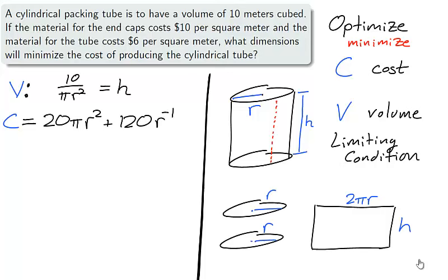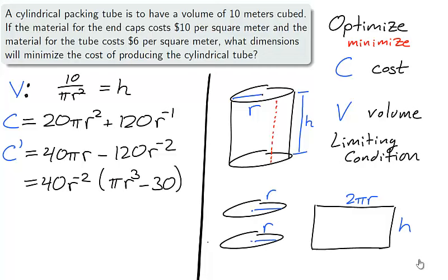We now have expressed C as a function of one variable, the radius r of the cylinder. To optimize, we begin by taking the first derivative. We simplify by factoring 40 and r to the negative 2, and we are left with πr³ minus 30.